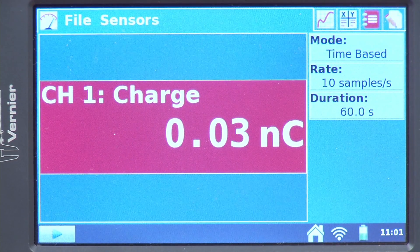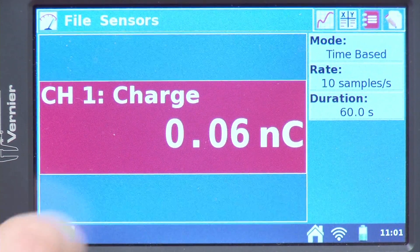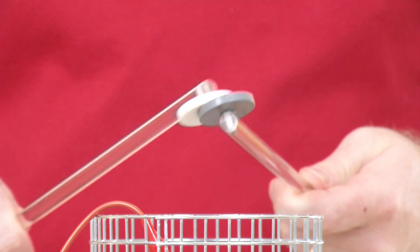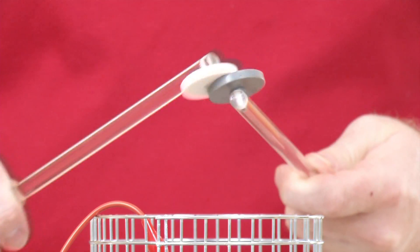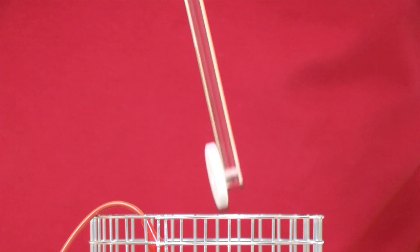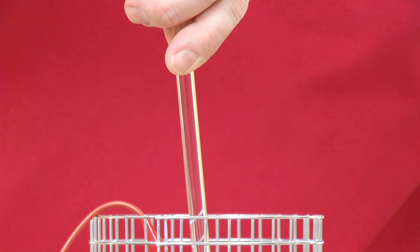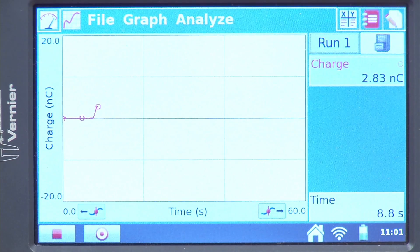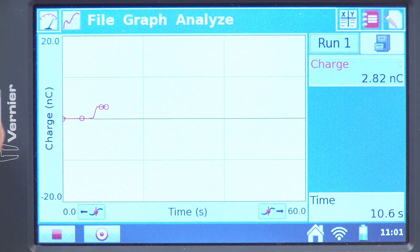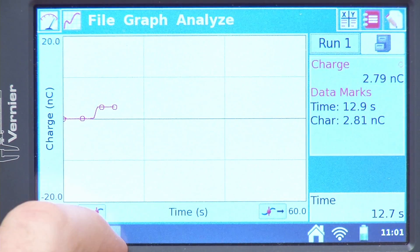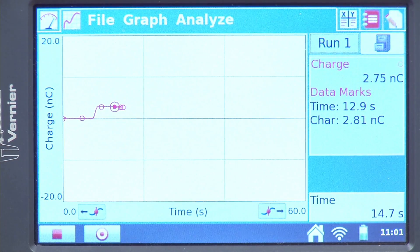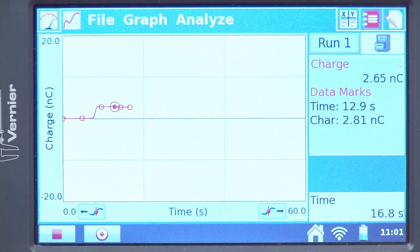So what I will do is start data collection, then rub the charge separators together, and then I'm going to stick the white one into the Faraday pail. And we watch the graph change there, and so I'm going to hit mark and mark that point. Now I will remove the white one.